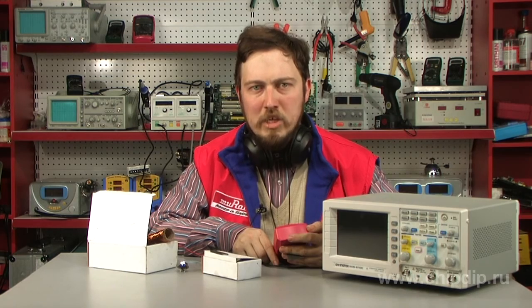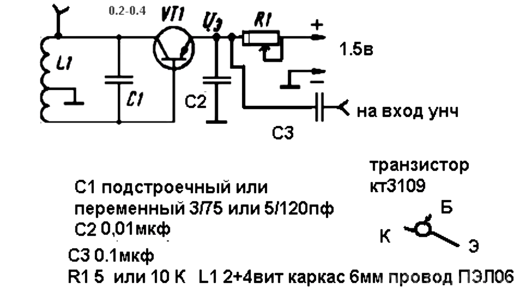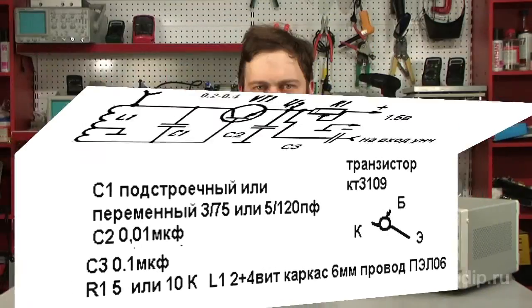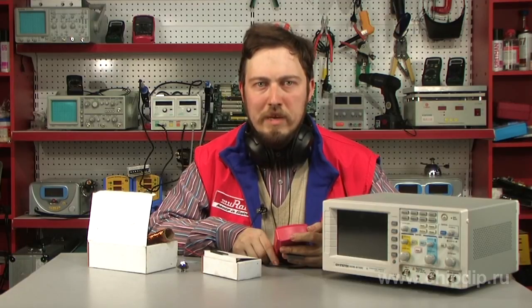When picking up signals of AM stations, this receiver has a sensitivity of up to 30 microvolts. When receiving beat telegraph signals, the sensitivity is several microvolts. From my own experience, using such a device with a good antenna, I could pick up radio stations from the Middle East.